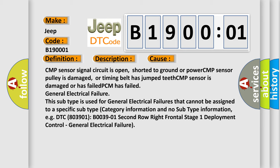This subtype is used for general electrical failures that cannot be assigned to a specific subtype, category information with no subtype information. For example, DTC B003901, second row right frontal stage 1 deployment control, general electrical failure.